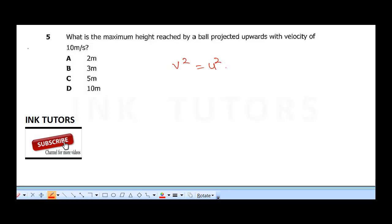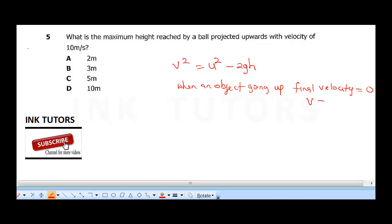You use v squared is equal to u squared. Now what are you going to use, positive or negative? Remember, whenever you're projecting something upwards, it's going to be negative because it's going against gravity. This is an equation of motion that requires height and velocity. It asks what is the maximum height reached. You know that when you are sending an object up, when an object is going up...